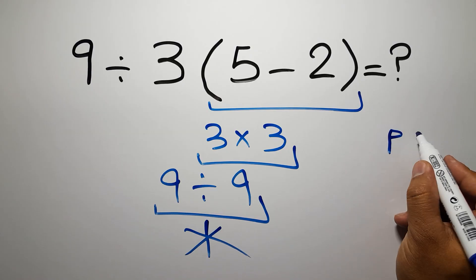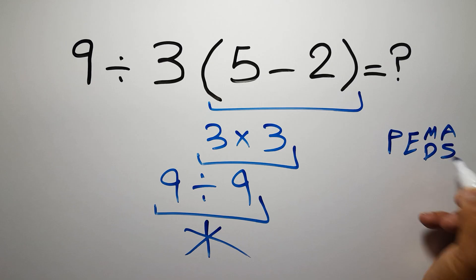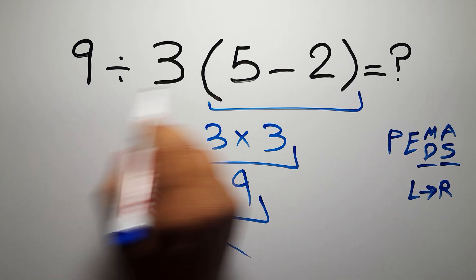to do parentheses, then exponents, then multiplication or division, and finally addition or subtraction. Remember that multiplication and division have equal priority and we have to work from left to right. The same applies to addition and subtraction.